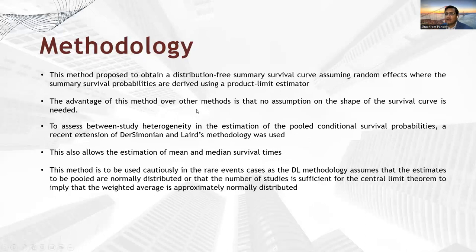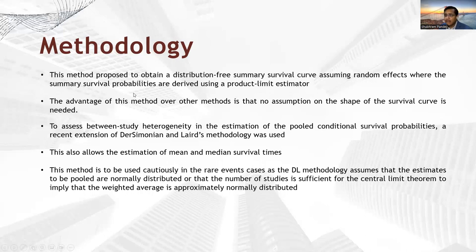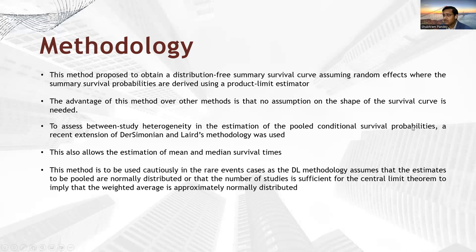The methodology explained in this paper proposes a distribution-free summary survival curve assuming random effects, where the summary survival curves are derived using the product limit estimator. The advantage of this method is that no assumption on the shape of the survival curves is needed — you don't have to assume exponential, Weibull, log-logistic, log-normal, or any other distributional shape. To assess the between-study heterogeneity in the estimation of the pooled conditional survival probabilities, a recent extension of the DL methodology was used, which also allows estimation of the mean and median survival times.